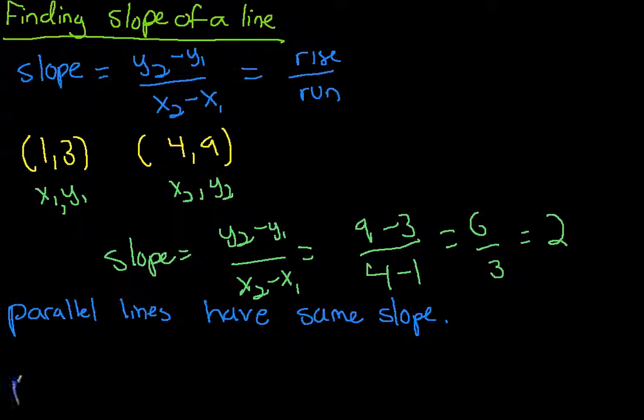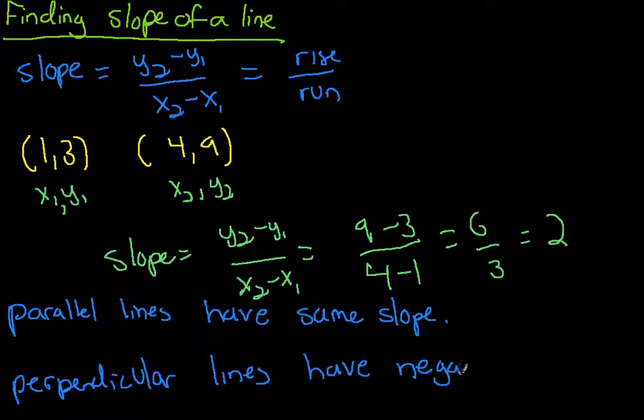Perpendicular lines have slopes that are negative reciprocals of each other. Parallel lines have the same slope. Perpendicular lines have slopes that are negative reciprocals of each other.